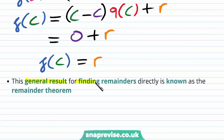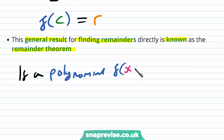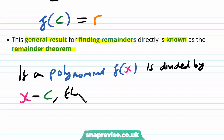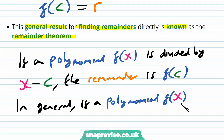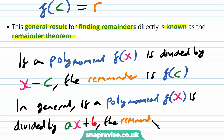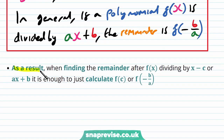This general result for finding remainders directly is known as the remainder theorem. If a polynomial f(x) is divided by x - c, the remainder is f(c). More generally, if a polynomial f(x) is divided by ax + b, the remainder is f(-b/a). As a result, when finding the remainder after f(x) is divided by x - c or ax + b, it's enough to just calculate f(c) or f(-b/a).